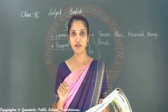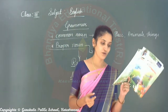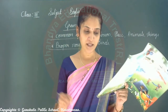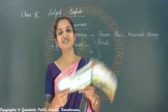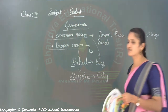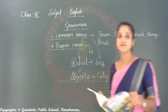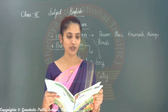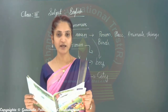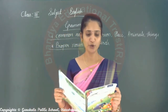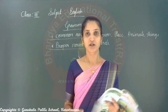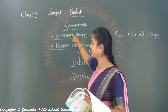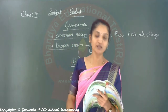Now come to common noun. What is a common noun? We use common noun to name a person, place, or an idea in a general sense — person, place, animals, things, birds. If we are calling all these in a common name, that is called common noun. Here, come to next page, page number 40. Here they are giving common nouns. Common nouns do not begin with a capital letter. You can identify very easily — proper noun begins with capital letter, but common noun does not begin with capital letter.